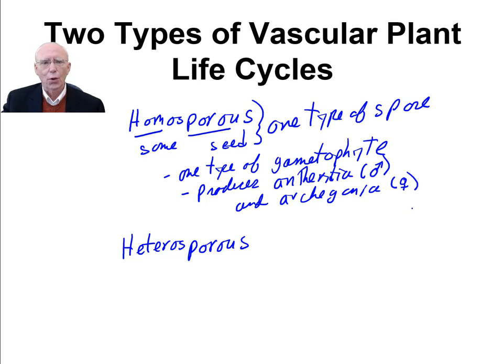So, homosporous: one type of spore, one type of gametophyte, that gametophyte containing both antheridia and archegonia.